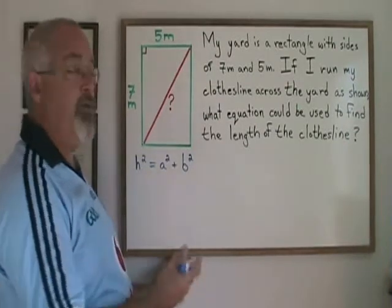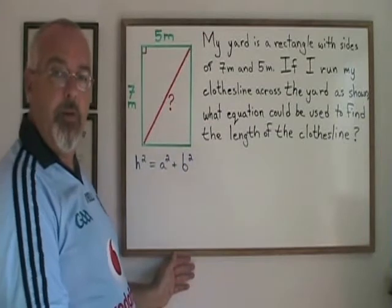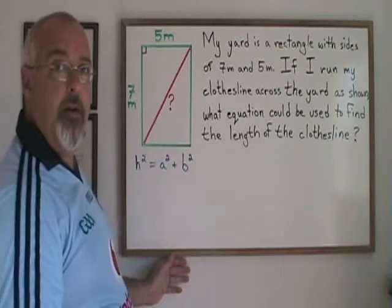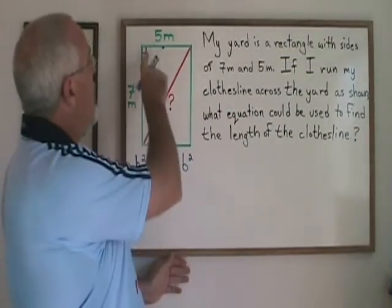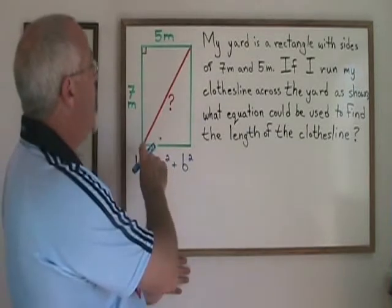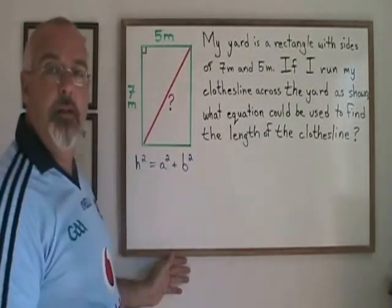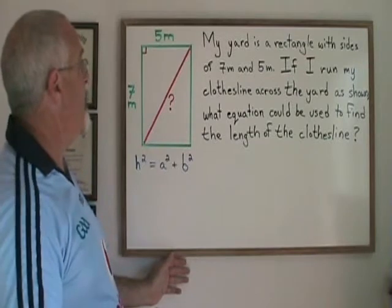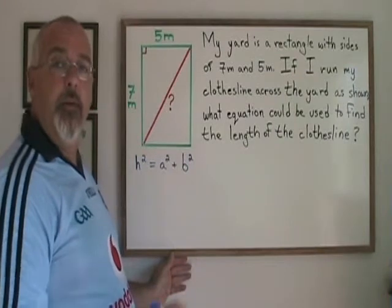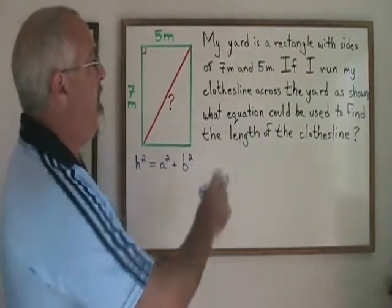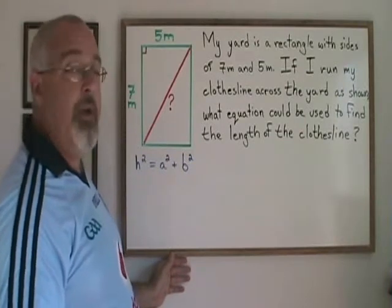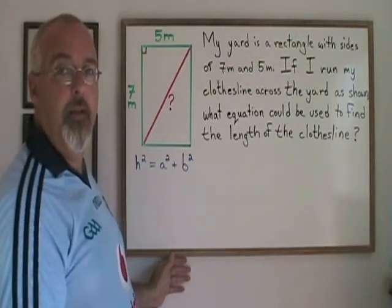On the surface, this is a fairly straightforward Pythagorean theorem situation. The 7-meter and 5-meter sides of the yard form a right angle because the yard is a rectangle, and they will form a right triangle with the clothesline, which is the hypotenuse. So I could use the Pythagorean theorem to find the length of the clothesline, but I have to slow down and be careful — I am not being asked to find the length of the clothesline. I am being asked to give an equation that could be used to find the length of the clothesline.